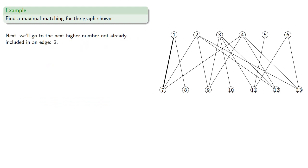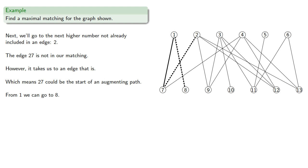Next, we'll go to the next higher number not already included in an edge, which is vertex 2. The edge 2-7 is not in our matching. However, it takes us to an edge that is, which means 2-7 could be the start of an augmenting path. We'll implement our depth-first search. 2-7 takes us to 7, 7-1 takes us to 1, and then from 1 to the lowest-numbered vertex is 8, which is not an edge included in our matching. So the edges 2-7, 7-1, 1-8 form an M-augmenting path. Switching out the edges, we have a new matching 2-7, 1-8.